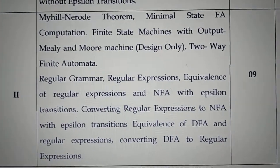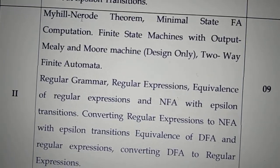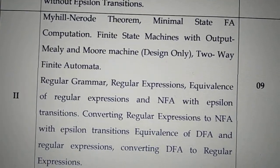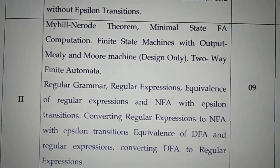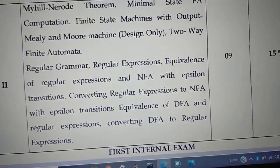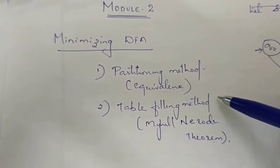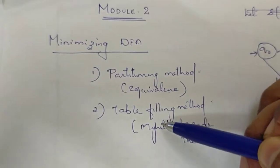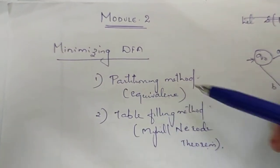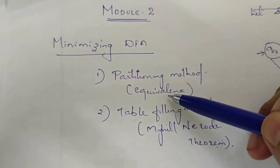The second module is TOC. The first topic is Myhill-Nerode and Minimal State Finite Automata Computation. The next one is DFA Minimization. Minimizing DFA has two methods: the first method uses the Myhill-Nerode equivalence method, and the second method is Table Filling. The Partitioning Method is an equivalence method.